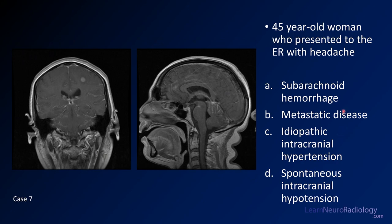Case number seven is a 45-year-old woman presenting to the ER with headache. You have two post-contrast images. If you're ever wondering if it's post-contrast, take a look at the nasal mucosa and pituitary, which are enhancing here. Your choices are subarachnoid hemorrhage, metastatic disease, idiopathic intracranial hypertension, or spontaneous intracranial hypotension.